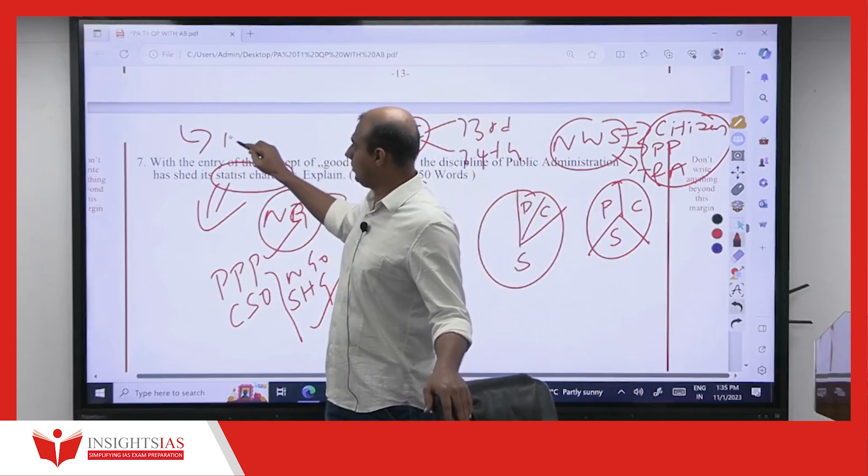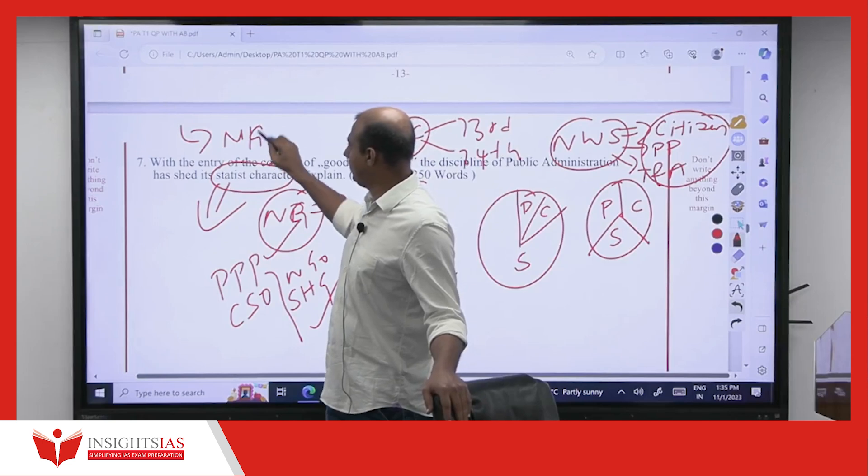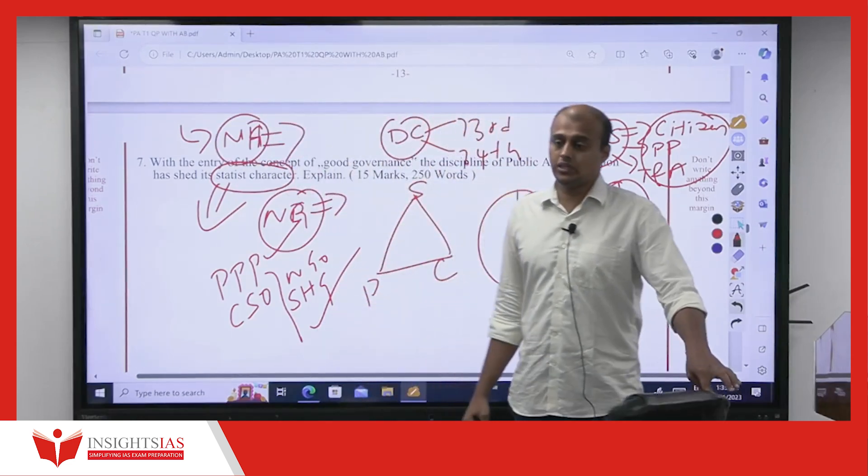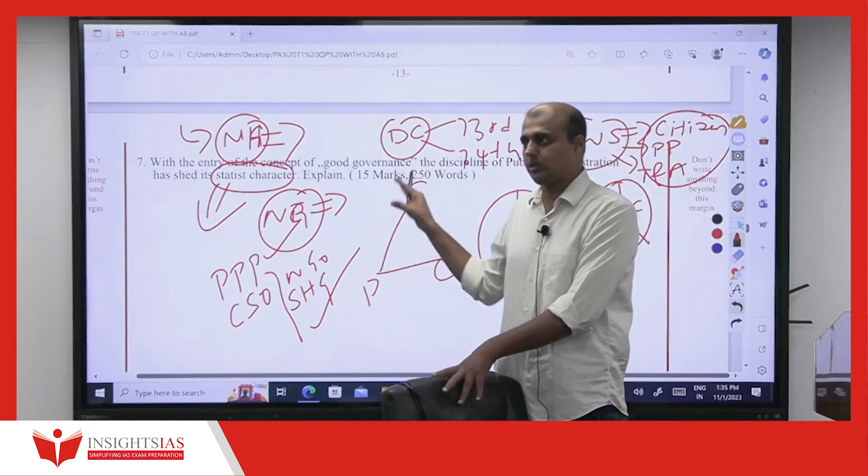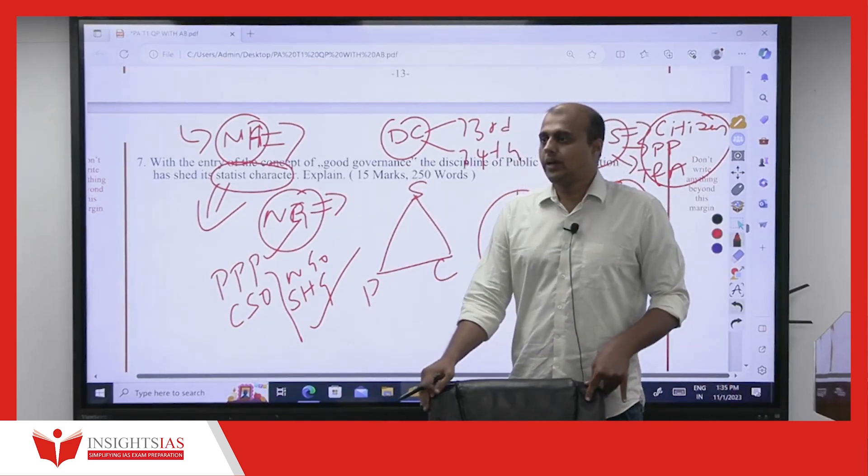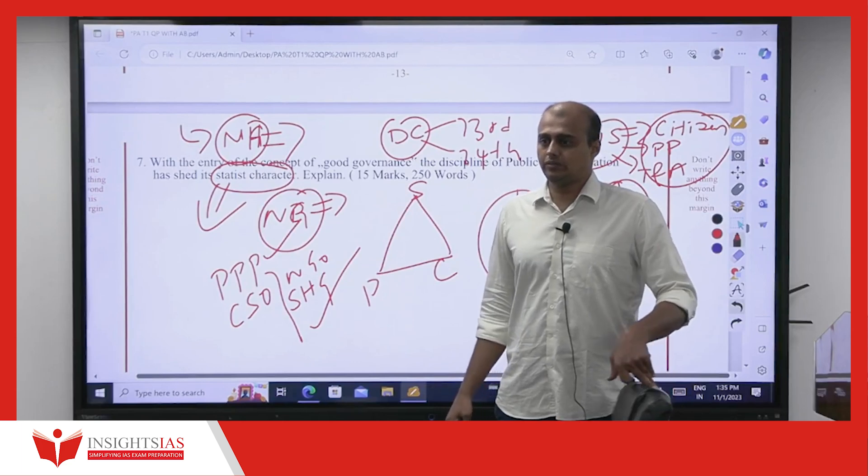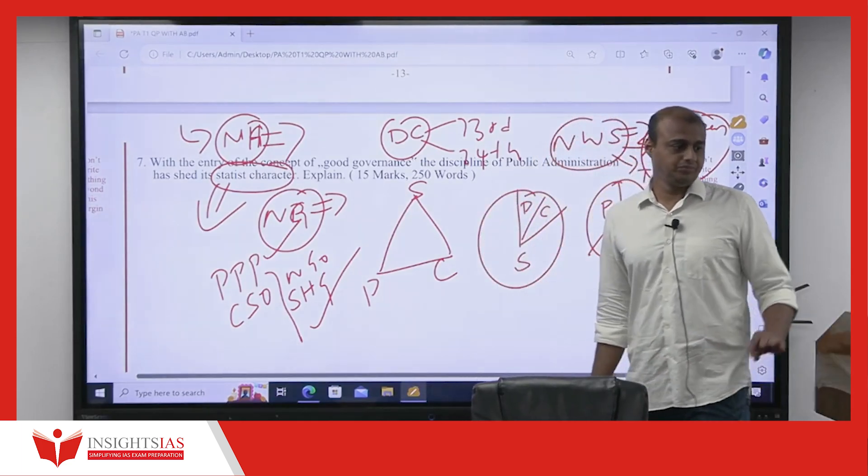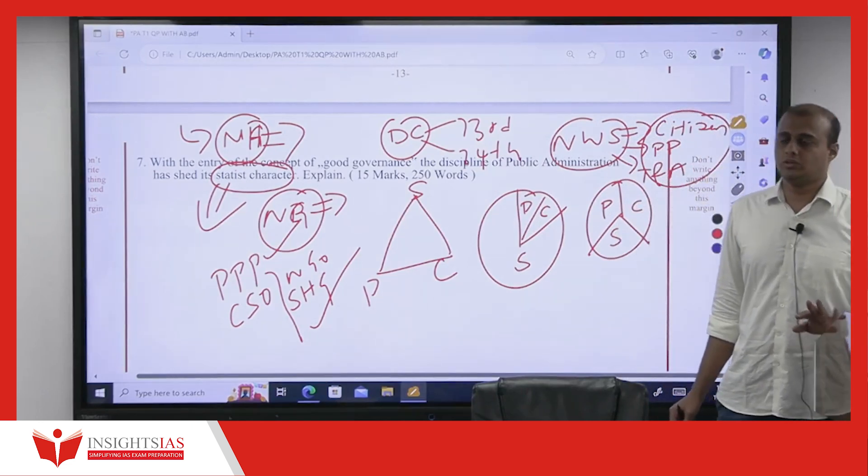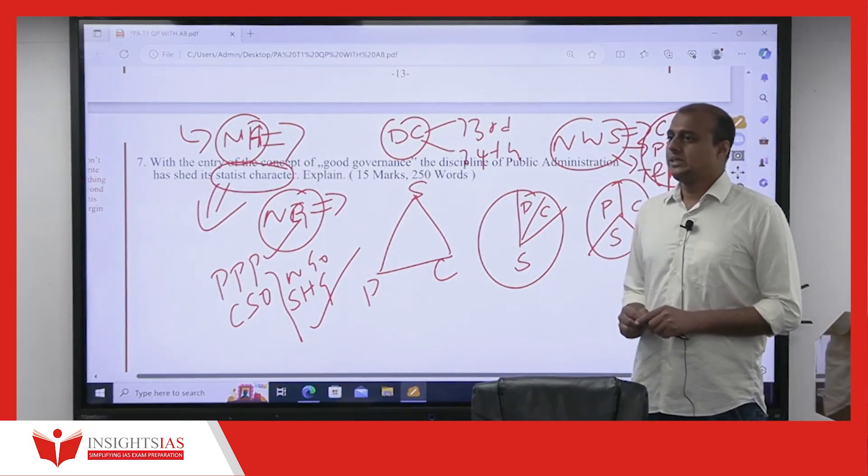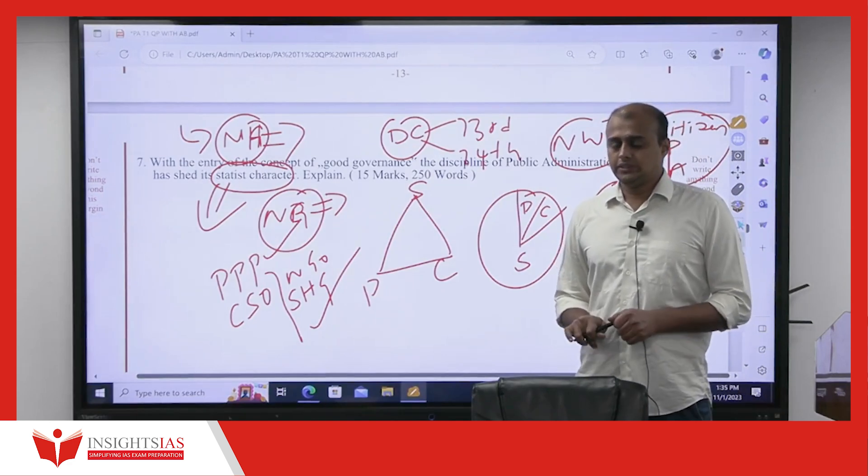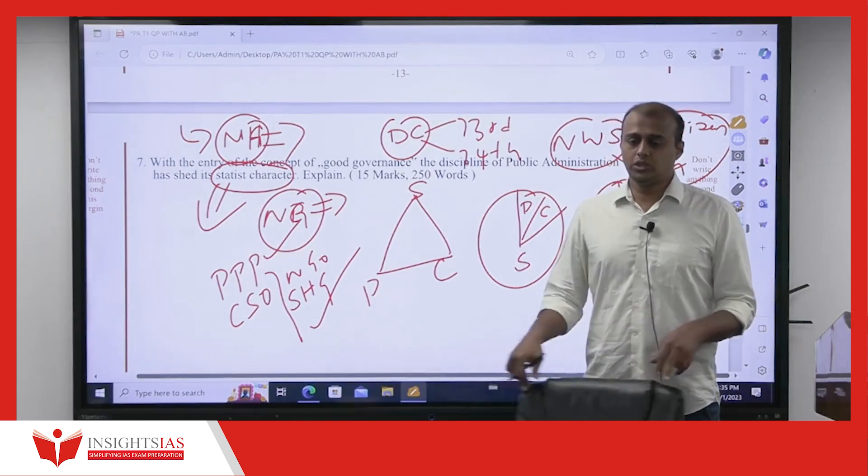Now, at the end, what you can tell? As identified by Nicholas Henry, today's governance is what? Institutional and networked. That should be your conclusion. Please write the conclusion. As identified by Nicholas Henry, today's governance is institutional and networked.